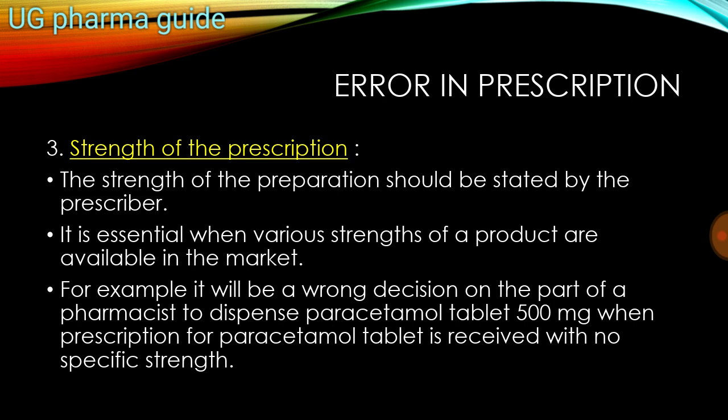Third is the strength of the drug. The prescriber must mention the strength of the medicine in the prescription. If the strength is not written, it is an error in the prescription. It is essential when various strengths of a product are available in the market. It would be a wrong decision on the part of a pharmacist to dispense the wrong strength.